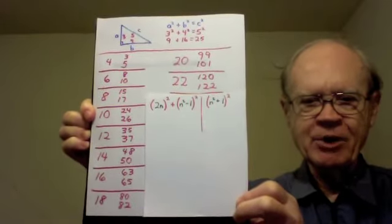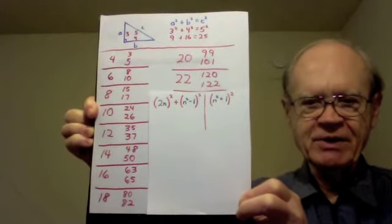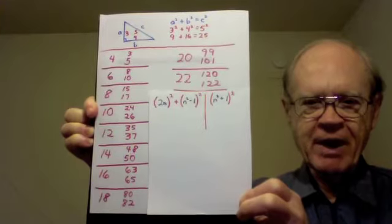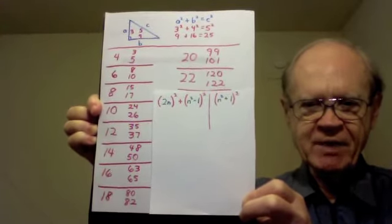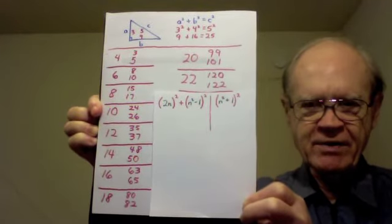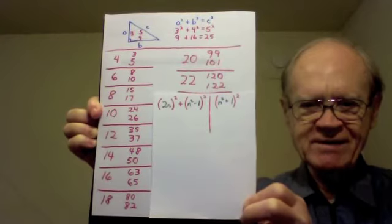Our task now is to show that these three numbers satisfy the Pythagorean equation. And so we need to compare 2n squared plus n squared minus 1 squared with n squared plus 1 squared.